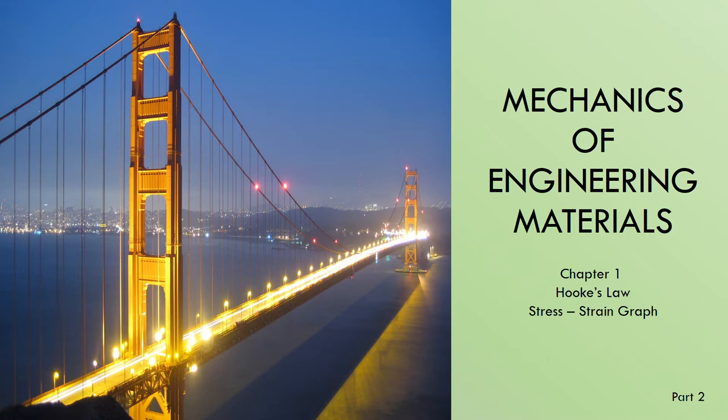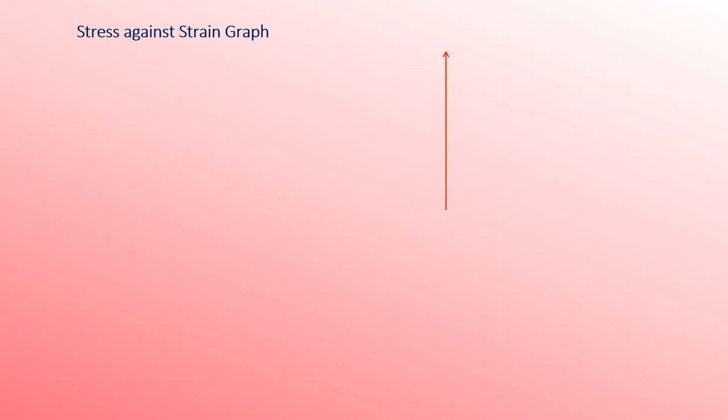On the stress against strain graph, the vertical axis is stress and the horizontal axis is strain. The slope of the initial straight-line portion of the curve refers to Young's modulus, also known as the elastic modulus.